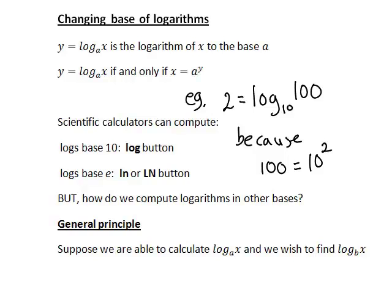Scientific calculators generally can compute logs base 10 such as the one we looked at here. So we would be able to work that out on a calculator using the log button as log of 100. Most scientific calculators will also calculate logs base e, which is the natural log or ln function. But what if we want to compute logarithms in other bases, such as base 3 or base 9.6?